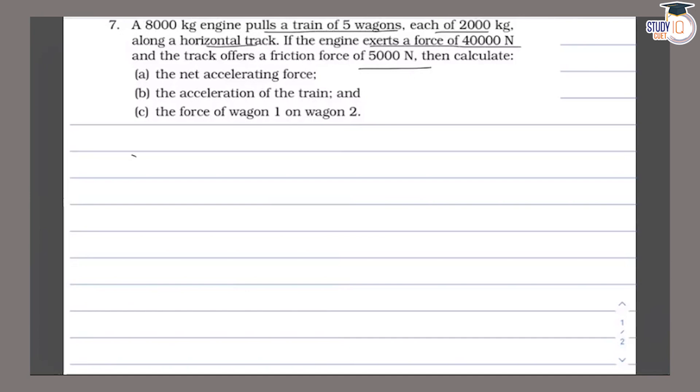Here we have an engine which has 8000 kg mass and 5 wagons attached, all moving on horizontal track. The engine has 40,000 newton force and the friction force opposed to the engine's motion is 5,000 newton. So the net accelerating force is the total force minus the friction force, which is 40,000 minus 5,000, giving us 35,000 newton.